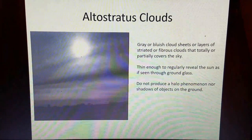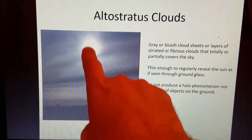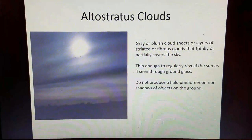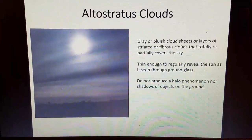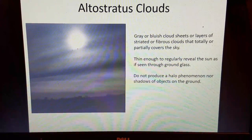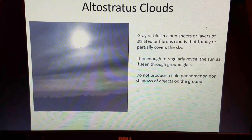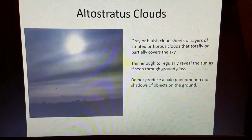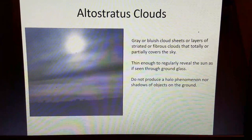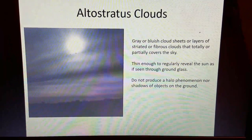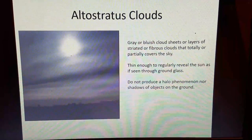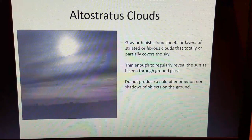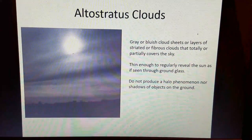Moving to mid-level clouds, we'll start with altostratus. Notice how the sun appears dimmer — it's dimmer through an altostratus cloud deck because it's thicker and lower. Altostratus clouds are gray or bluish cloud sheets or layers of striated or fibrous clouds that totally or partially cover the sky. They're thin enough to reveal the sun as if seen through ground glass, but they do not produce a halo, nor do they cast shadows of objects on the ground. So: halo means cirrostratus; no halo and no shadow means altostratus.